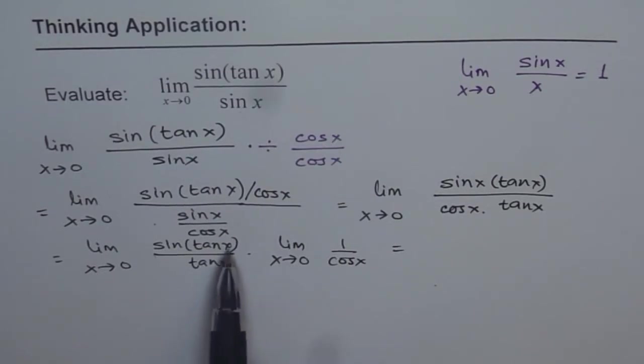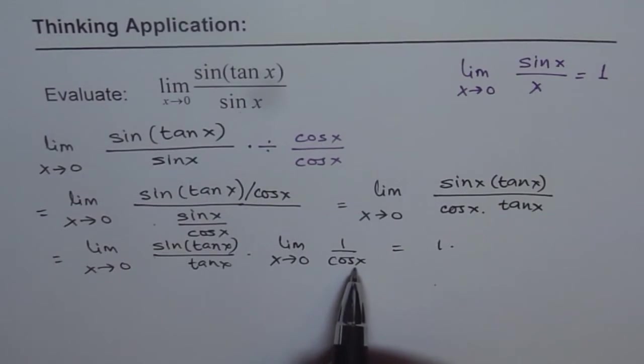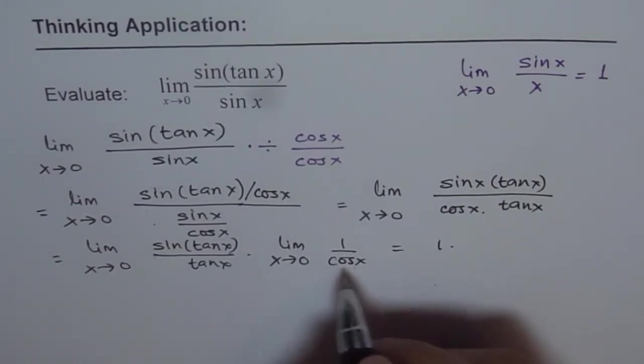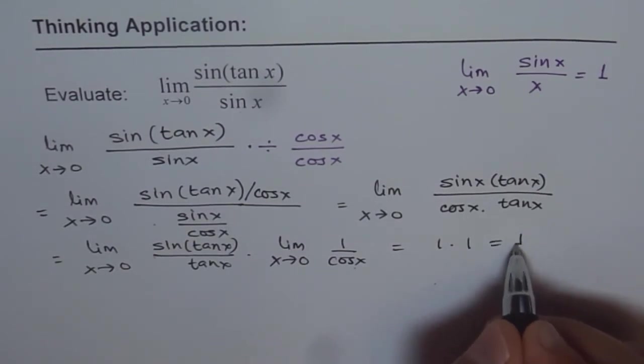Sin(tan x) over tan x is the same thing. So this limit is 1 for us. Do you see that? So we have 1 times—and how about this? When I substitute 0 into cos x, we get 1. So it is 1 times 1. We get the answer as 1.